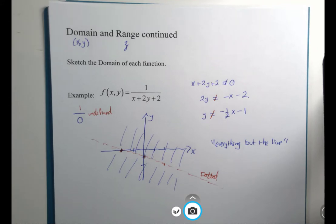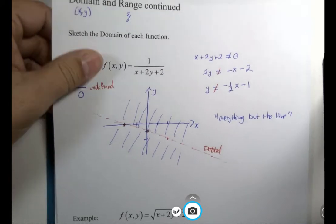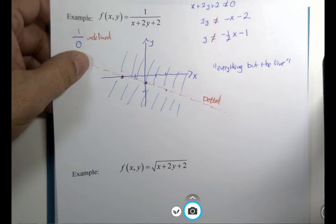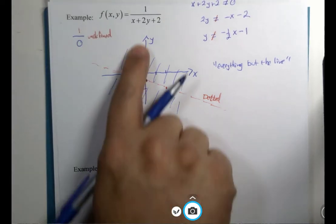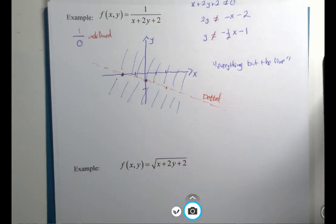Now, let's look at a modification of this problem. What if it was the square root of this same algebraic expression, x plus 2y plus 2.